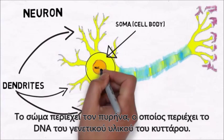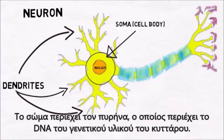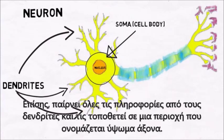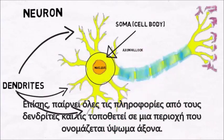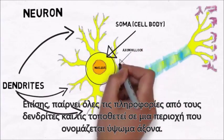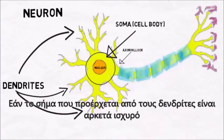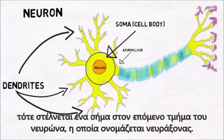The soma contains the nucleus, which contains the DNA, or genetic material of the cell. The soma takes all the information from the dendrites and puts it together in an area called the axon hillock. If the signal coming from the dendrites is strong enough, then a signal is sent to the next part of the neuron, which is called the axon.